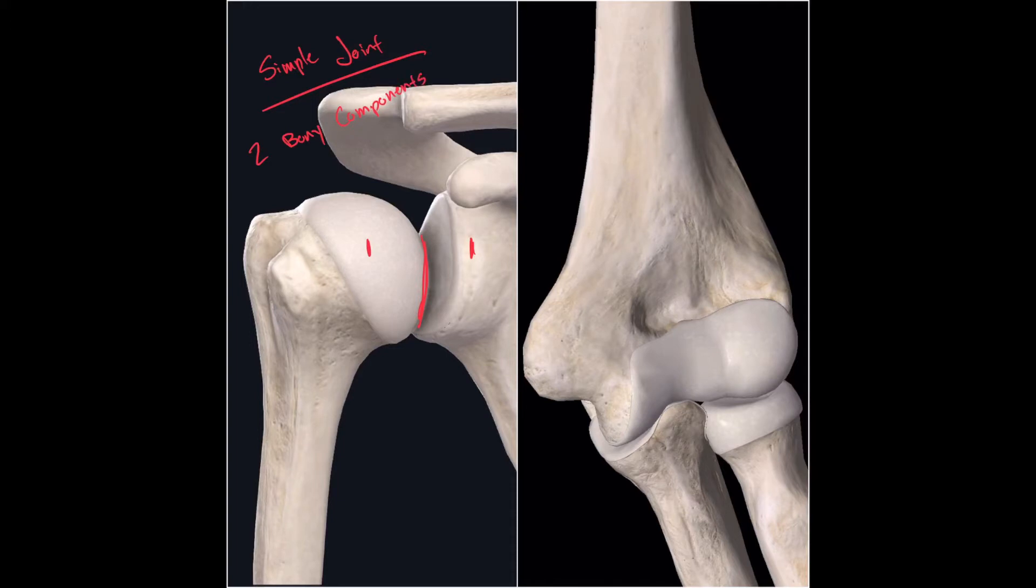components. Compared to the elbow joint, we have one, two, three bones forming this joint. This type of joint is a complex joint.